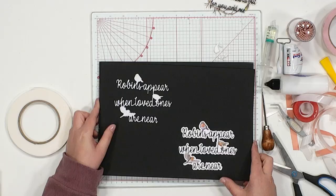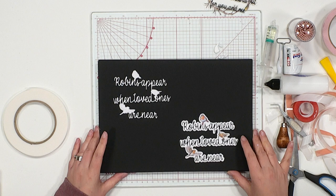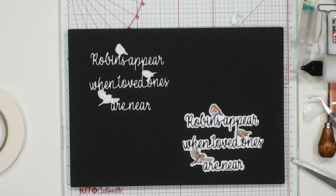Shall we have another look at the boards? Let's just go through what we get within this collection. Let me just grab them. Okay, so here we go. This is lovely. And you have asked for this so, so many times. Robins appear when loved ones are near.